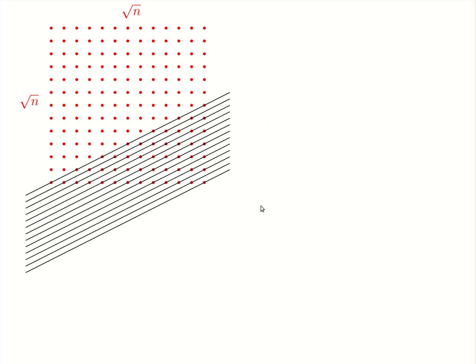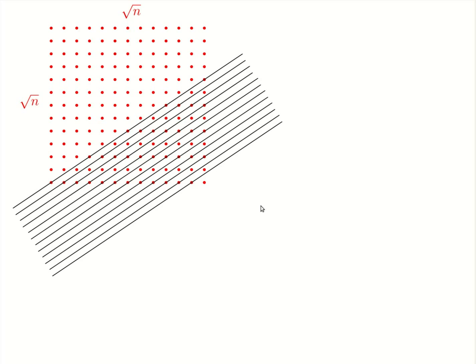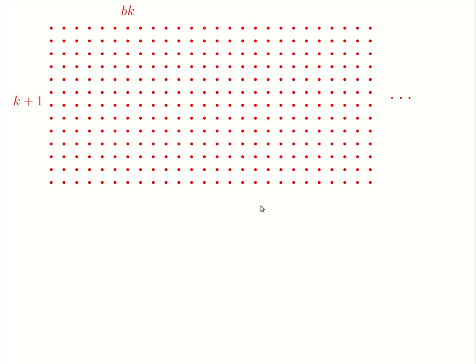it becomes obvious that maybe this regular grid is not truly the best way of doing it. And in fact, it turns out to get the asymptotically highest number of incidences possible, we need to look at an irregular grid. Such a grid will have one side much longer than the other side. So in this picture, we assume that this side has k plus 1 points,